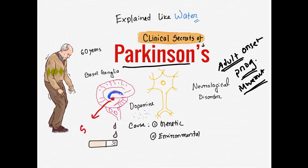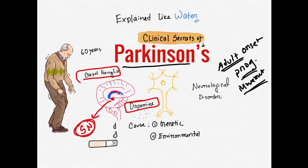The key features are rigidity, resting tremor, and postural instability. The region of the brain involved is the substantia nigra. The neurons in the substantia nigra are important because they produce dopamine. The basal ganglia is responsible for movement. Dopamine is produced in the substantia nigra and acts on the basal ganglia for movement control.